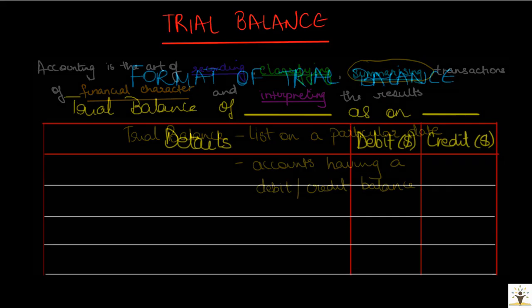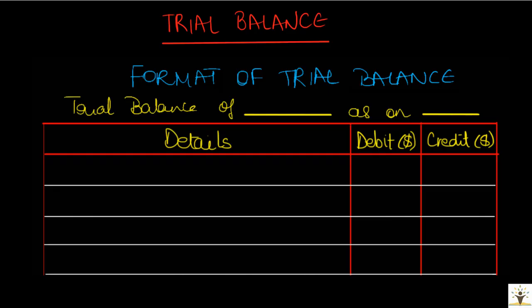This is the format of a trial balance. There are three columns here: details column, debit column and the credit column. There is no date column in a trial balance as the trial balance is always prepared on a particular date, which is usually written on the top. The details column will have all the names of the accounts having either a debit balance or a credit balance.